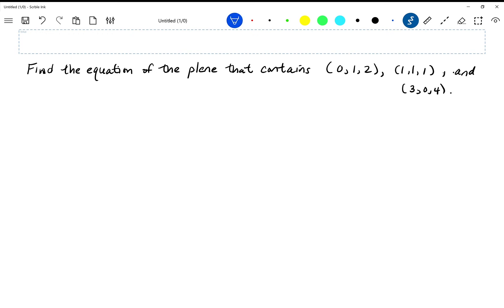All right, so what we have here is we're going to write the equation of a plane that contains three points, and they are not collinear points, so they are three separate points.